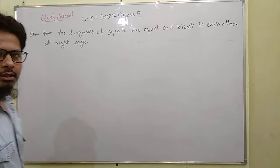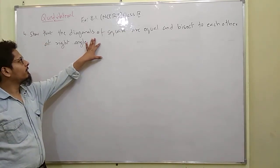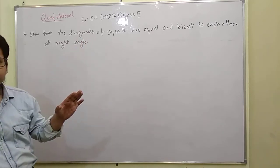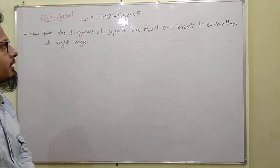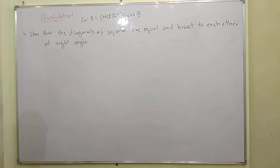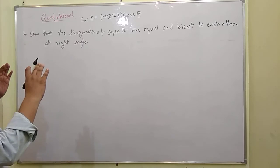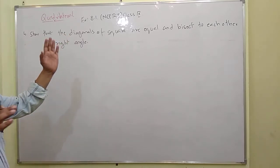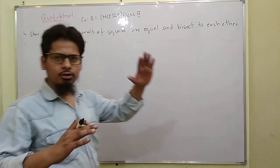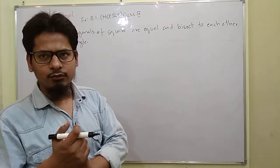Now, Question number 4. The question is: we have to show that the diagonals of a square are equal and bisect each other at right angles. This is what we have to prove.